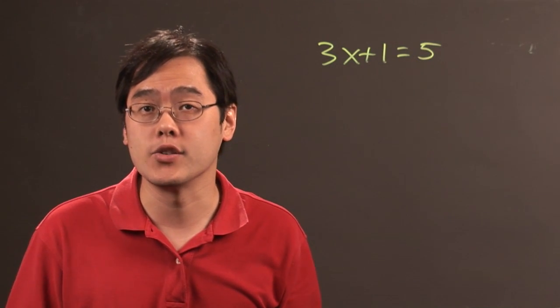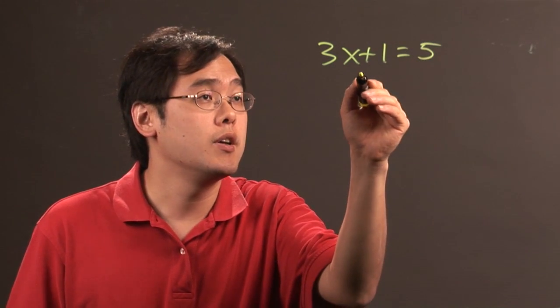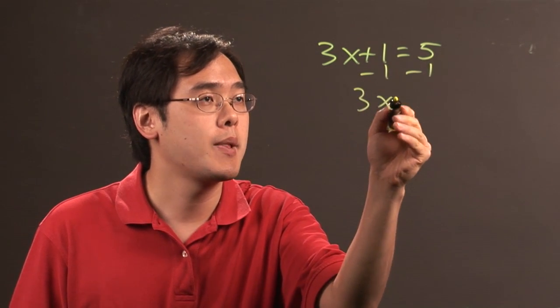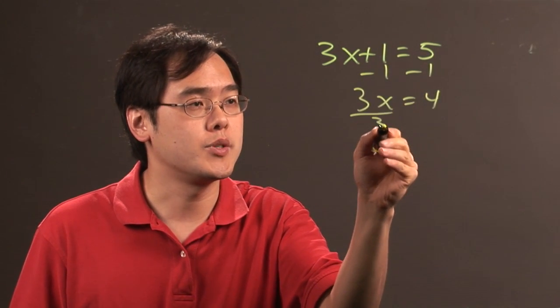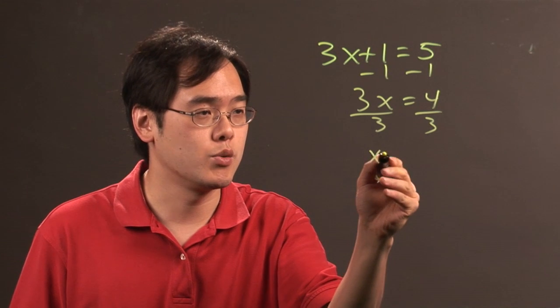you want to solve it first and then check it later using algebra. So if you want to solve it, subtract 1 on both sides. You have 3x equals 4, and then divide both sides by 3. You will get x equals 4 thirds.